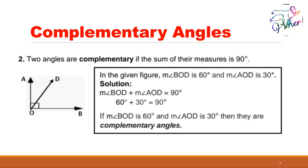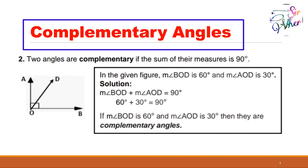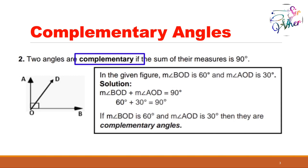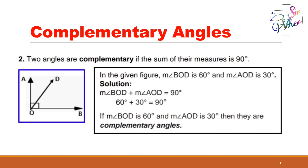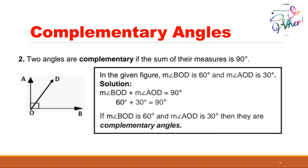For the second one: complementary angles. Two angles are complementary if the sum of their measures is equal to 90 degrees. In the given figure, the measure of angle BOD is 60 degrees and the measure of angle AOD is 30 degrees. The sum is 60 degrees plus 30 degrees, which equals 90 degrees. Therefore, the two angles are complementary.